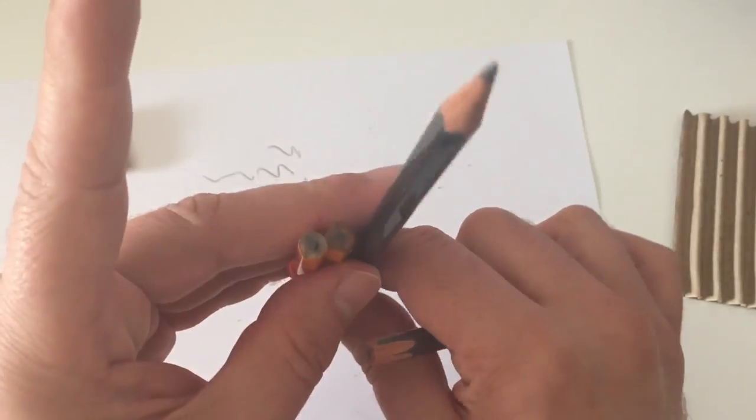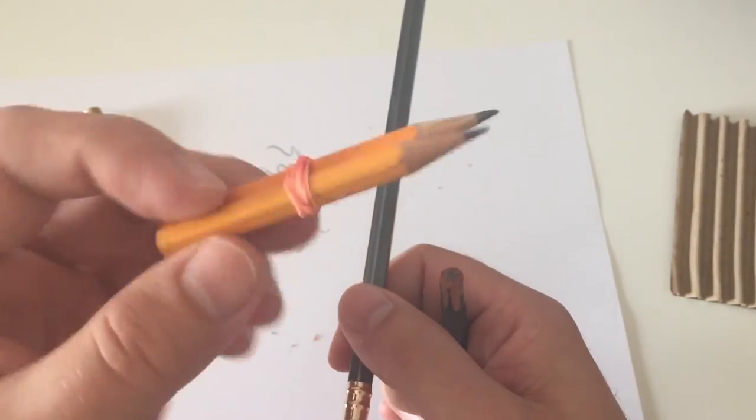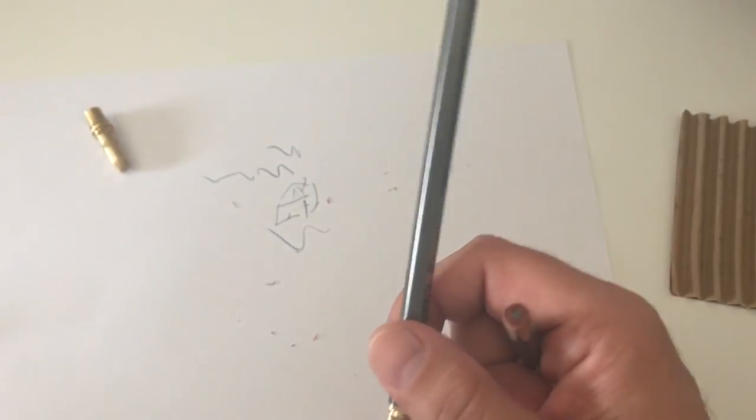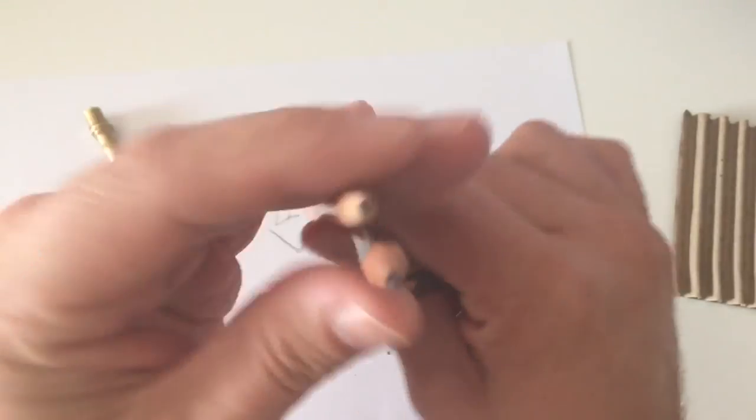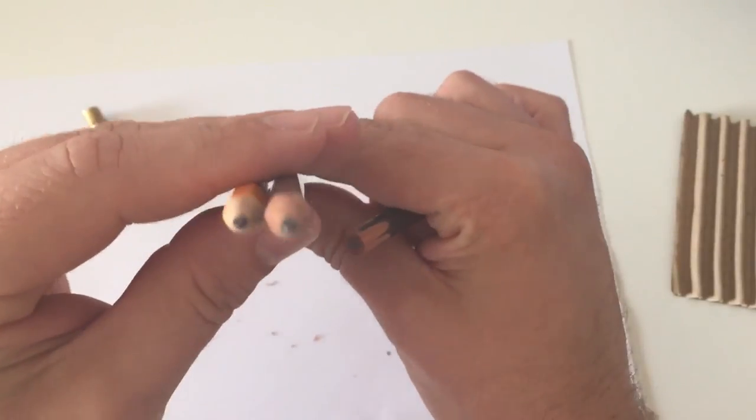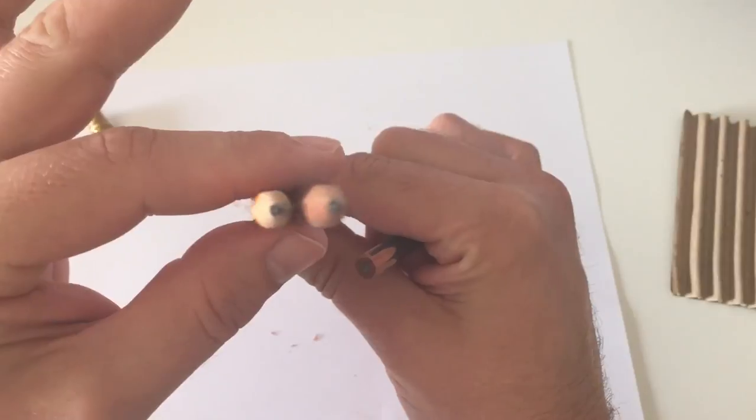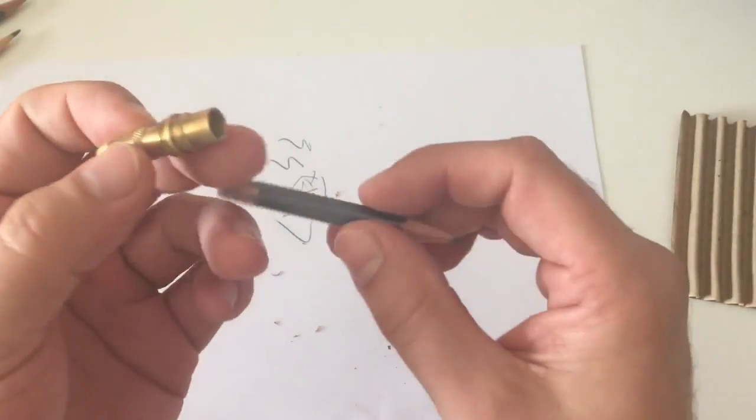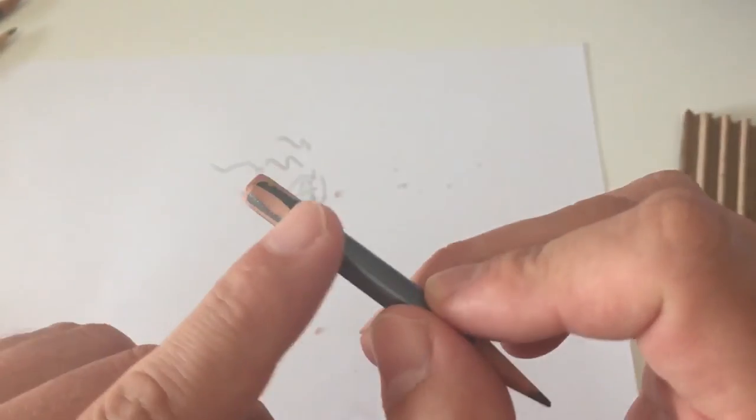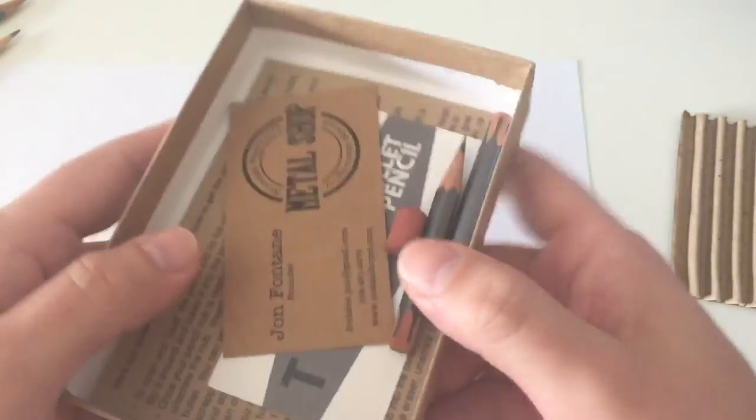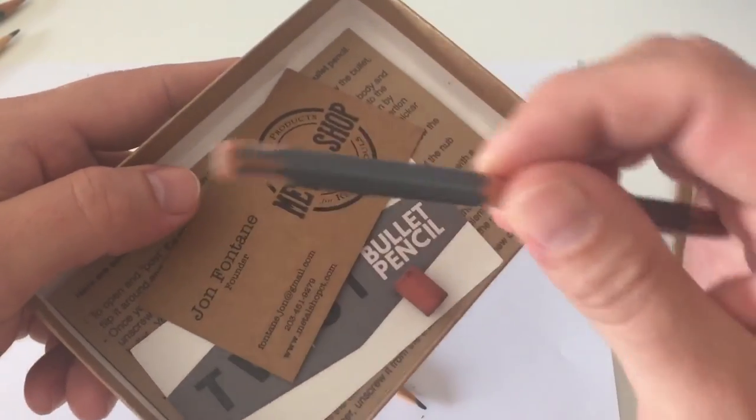The Blackwing pencils are a little bit thicker than normal. For example, I like to use these Faber-Castell pencils. You can see that the Faber-Castell is thinner in diameter than a Blackwing. In order to fit in a Blackwing, you gotta cut off those hexagonal edges.